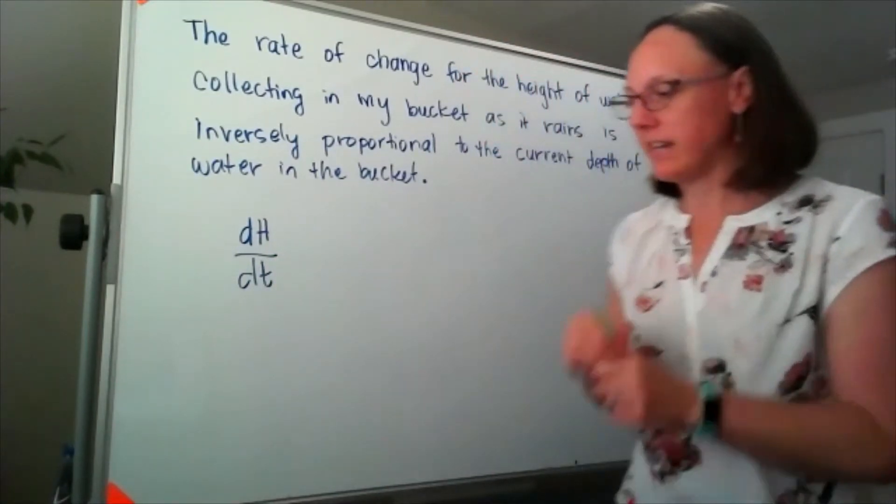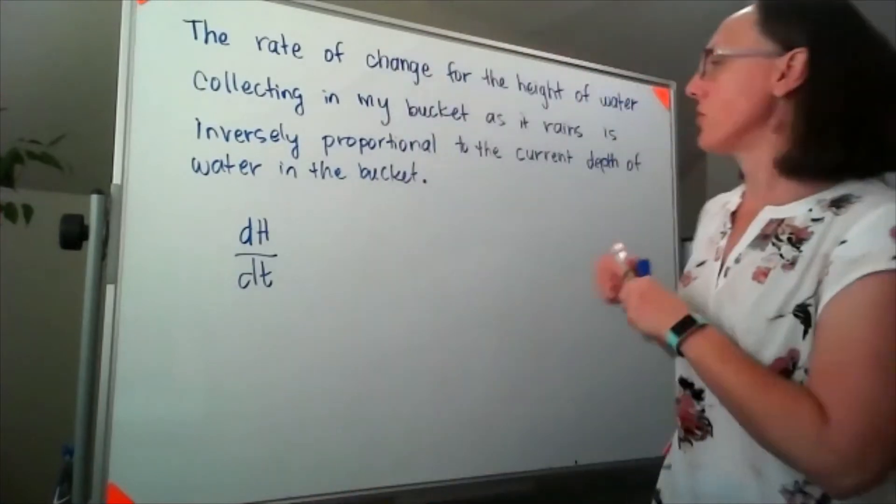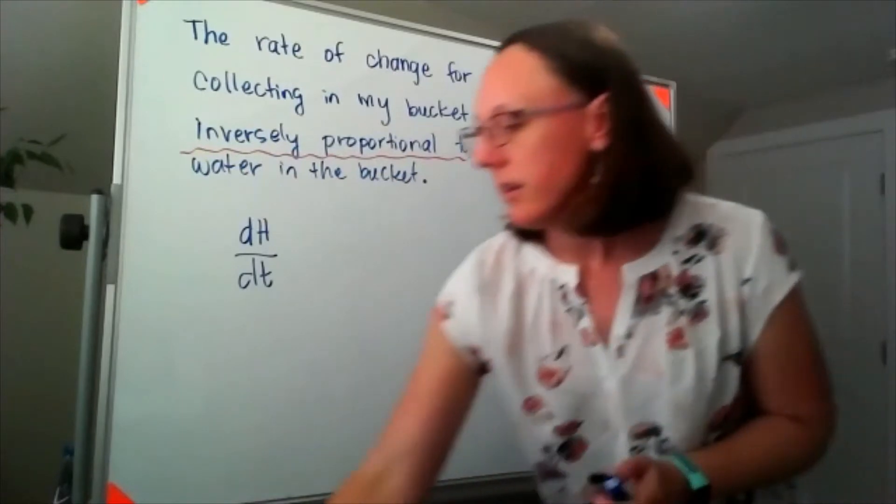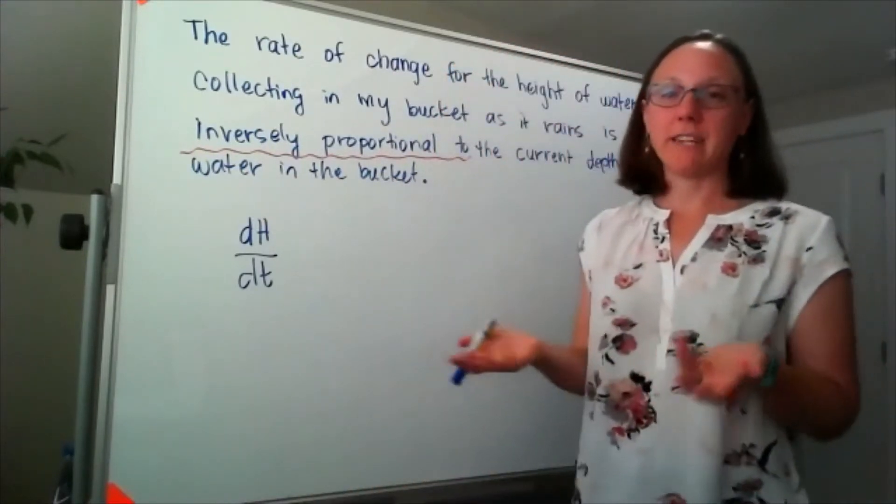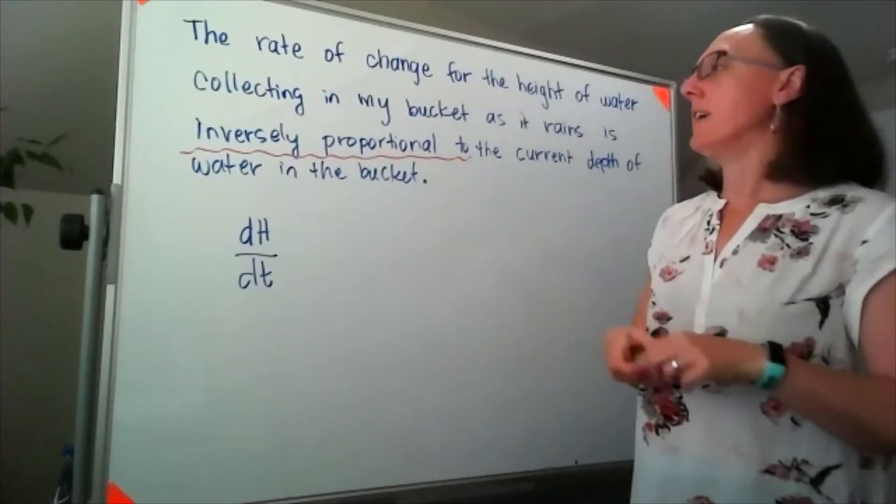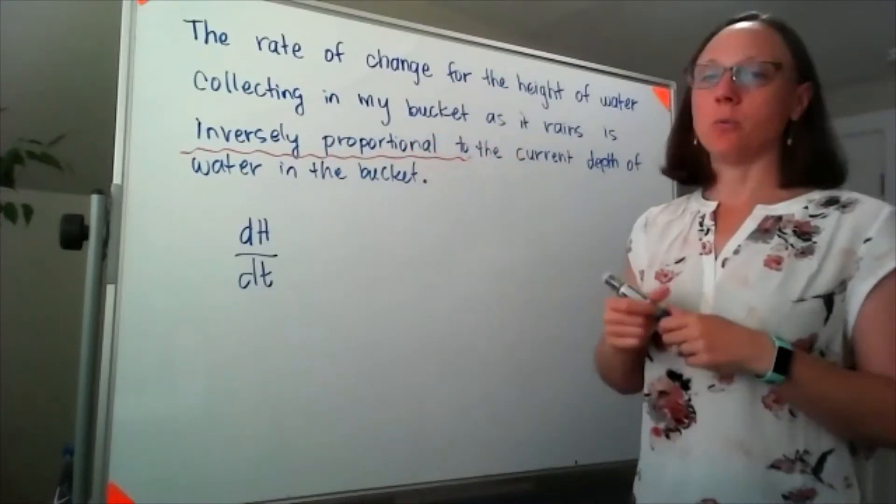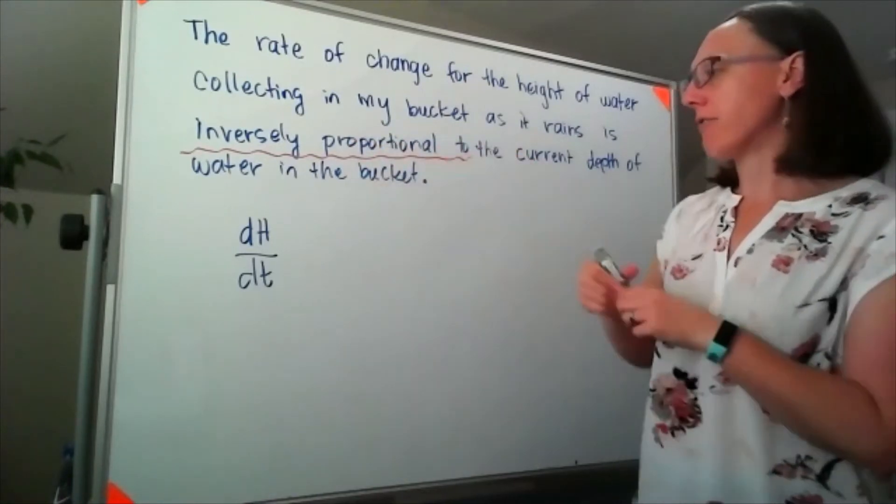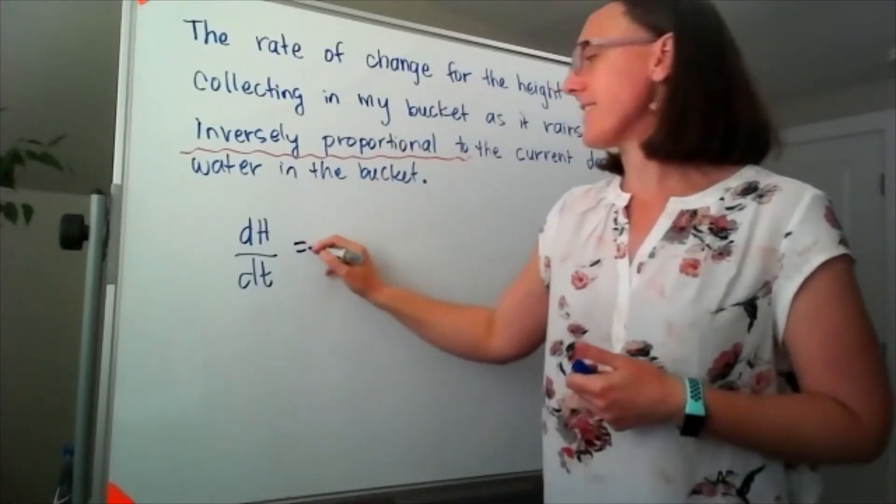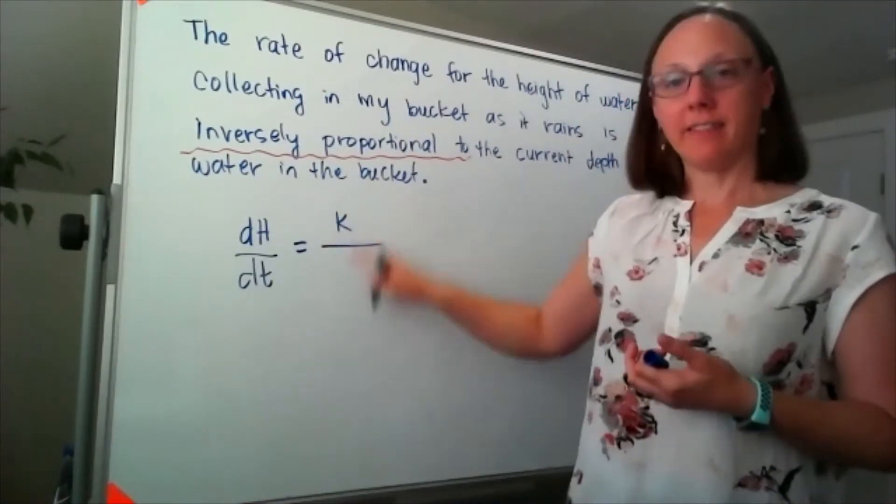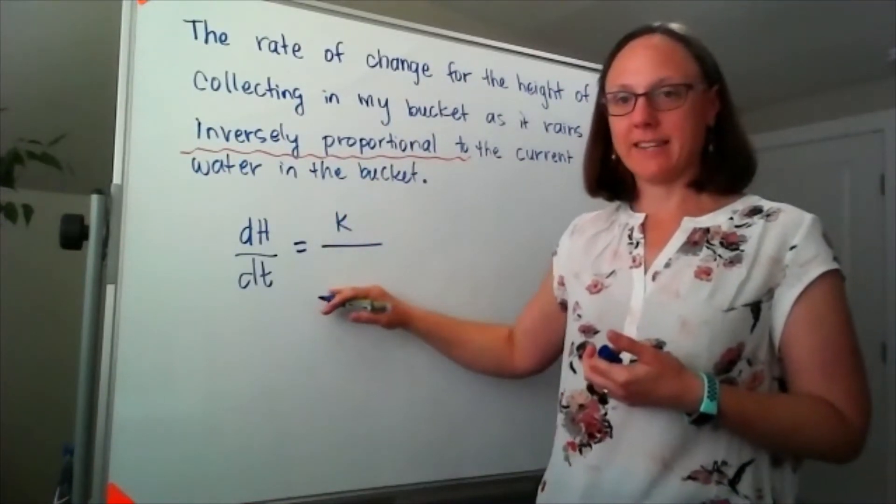Now that phrase 'inversely proportional to' is a phrase you might remember from a pre-calc or algebra two class. Proportional to means it's going to be equal to a constant times, but the inversely means it's equal to a constant divided by—that's the inversely part, the divided by.